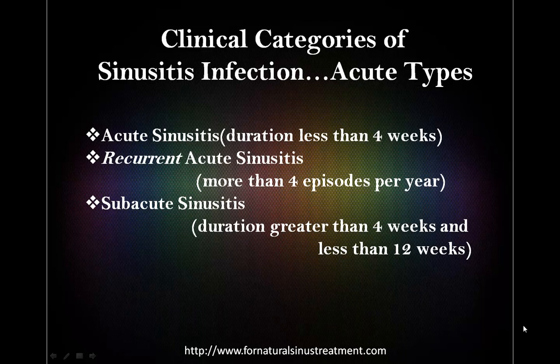Recurrent acute sinusitis is defined by symptoms and physical findings consistent with acute sinusitis, with symptoms worsening after 5 days or persisting up to 10 days. Each episode lasts 7 to 10 days or more, and may last up to 4 weeks. Furthermore, as many as 4 episodes may occur in one year. Between episodes, symptoms are absent without current antibiotic therapy. The diagnostic criteria for recurrent acute sinusitis are otherwise identical to those for acute sinusitis.